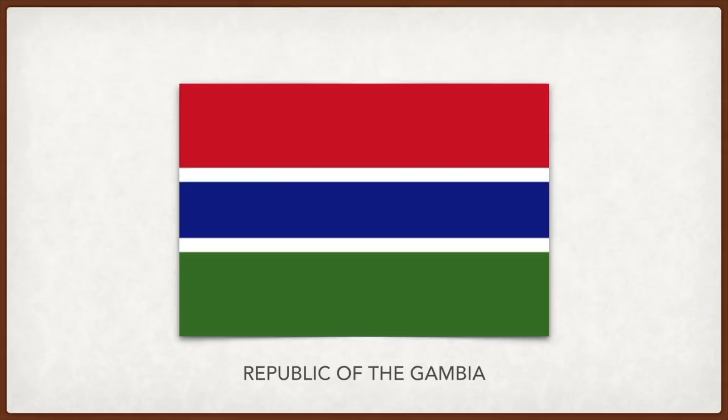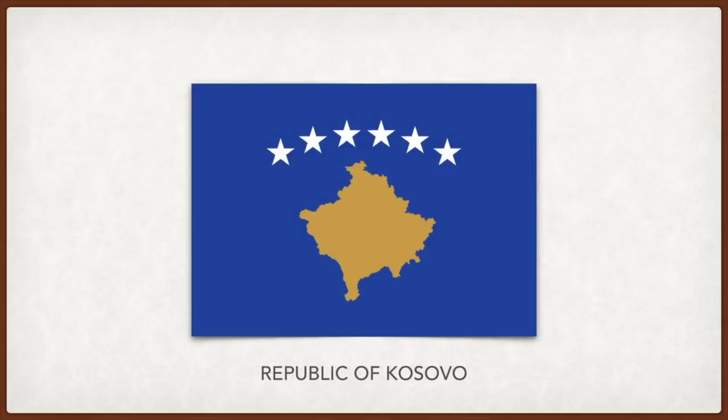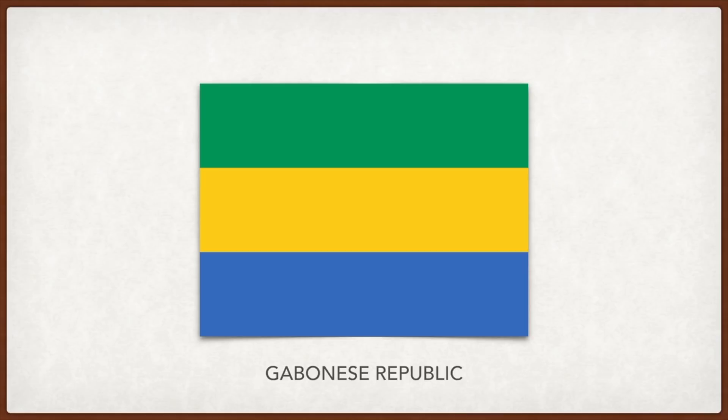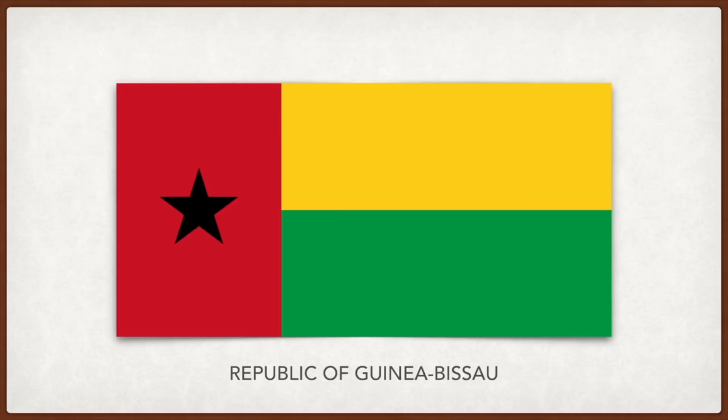Gabon: the green is for the country's forested area — an important economic resource — the yellow stripe in the middle symbolizes the equator which crosses the country, and blue is for the Atlantic Ocean on its coast. Guinea-Bissau: the flag is based on the flag of the African Party for Independence of Guinea and Cape Verde; the black star was symbolic of the African people and their determination to live in dignity, freedom, and peace.